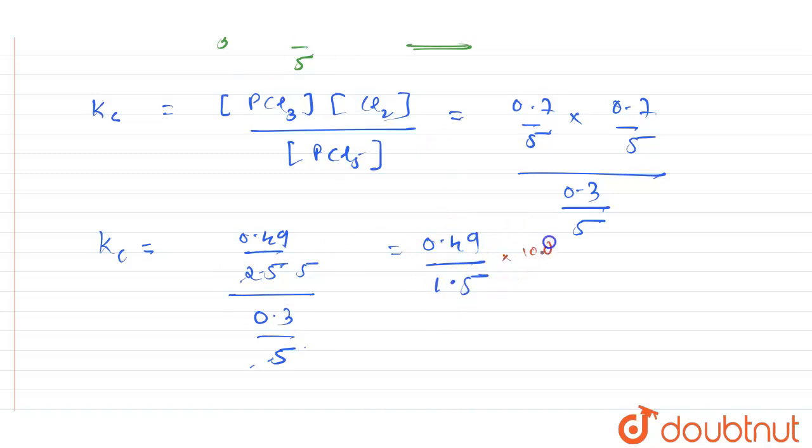Then you will have this as 0.49 divided by 1.5. If you multiply this with 100 and divide by 100, so the unity is maintained, this will be equal to 49 divided by 150. So this is the value for Kc which I have got.